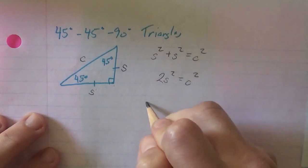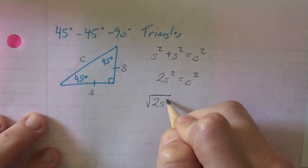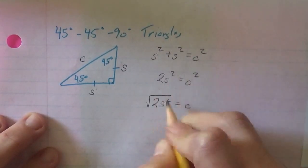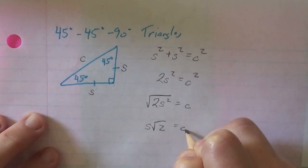And I'm solving for C, so I'll take the square root. So the square root of 2S squared will be C, pop out an S, S root 2 is C.